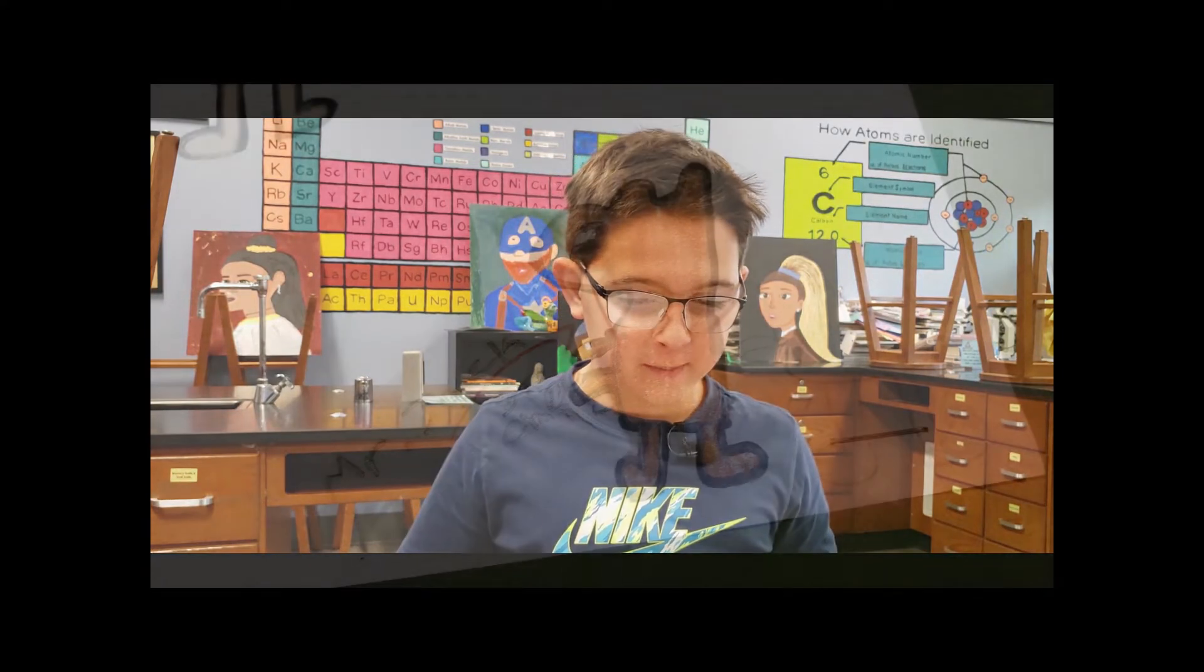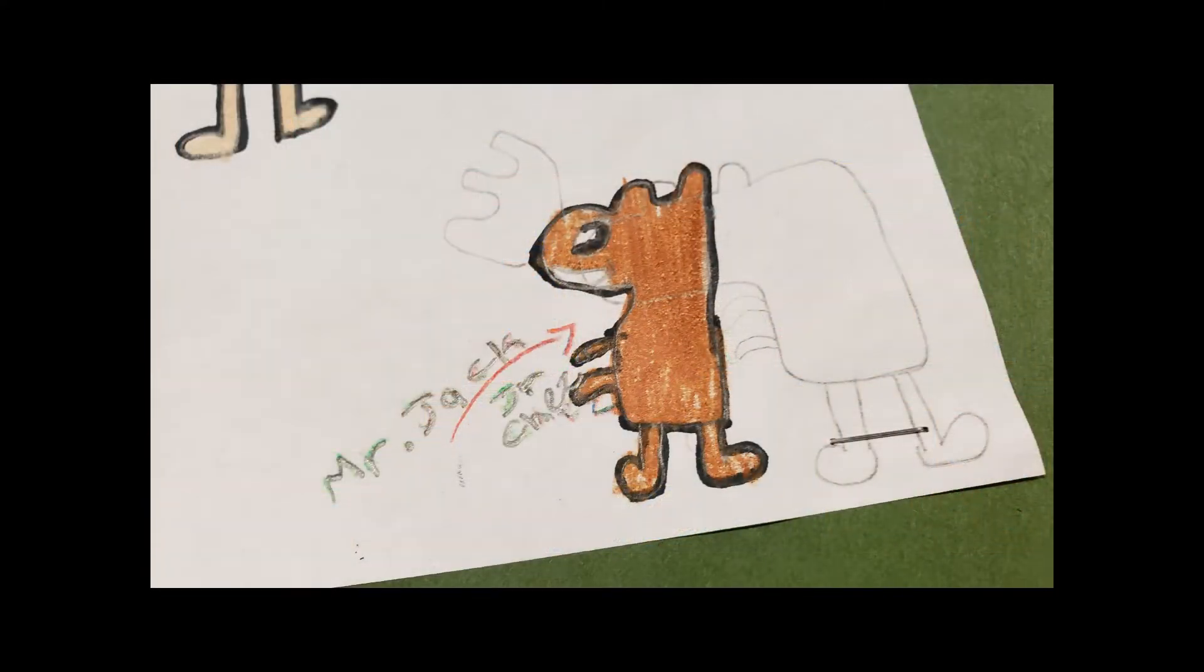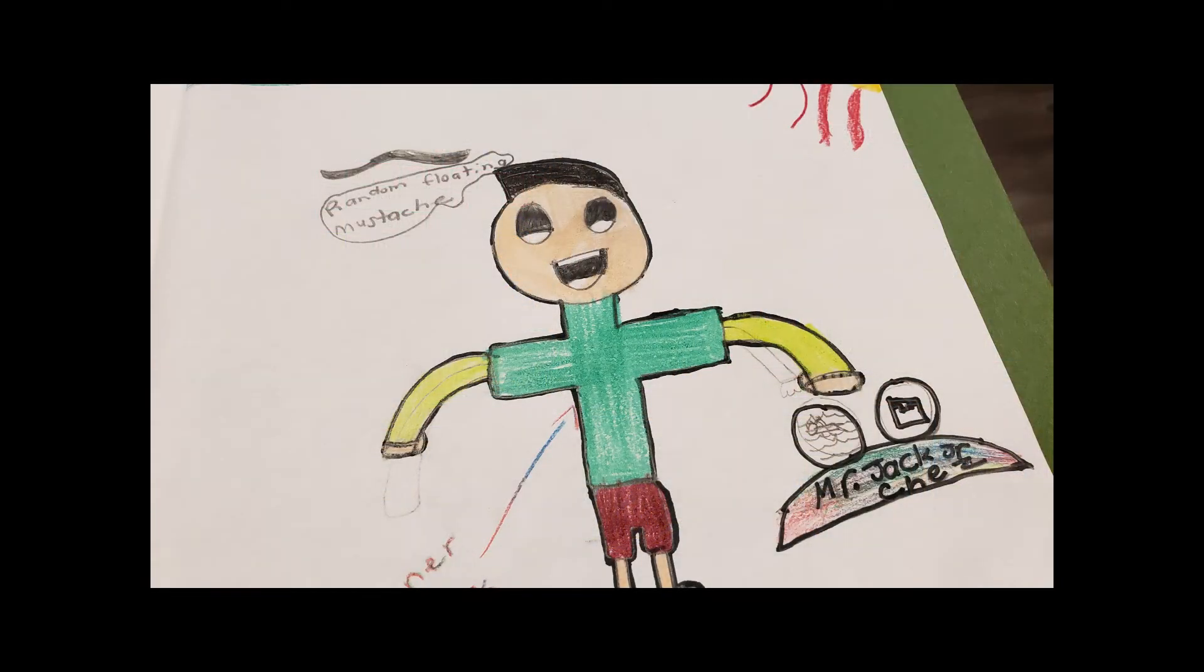Once upon a time there was a gerbil named Mr. Jack Jr. Chez. His owner's name is Jack. Jack plays soccer and he has a little brother named Blake.